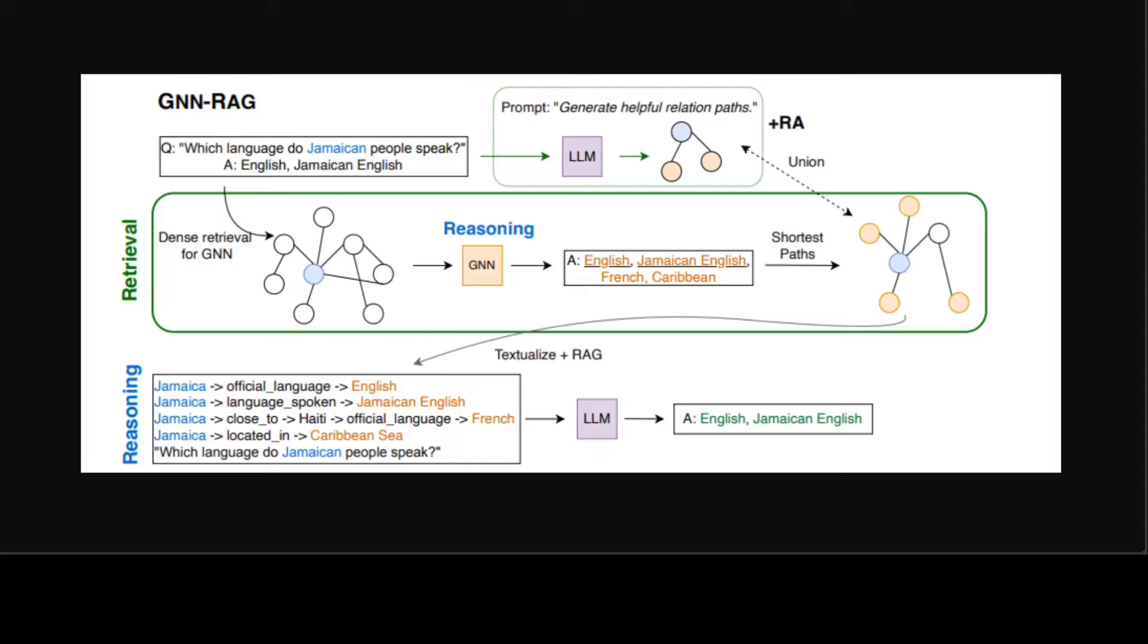So this framework, which is GNN-RAG, has repurposed GNNs for KGQA. The retrieval analysis guides the design of a retrieval augmented technique to boost GNN-RAG performance. And its effectiveness and faithfulness has already been proven by the benchmarks. And it is also shown to retrieve multi-hop information that is necessary for faithful LLM reasoning on complex questions.